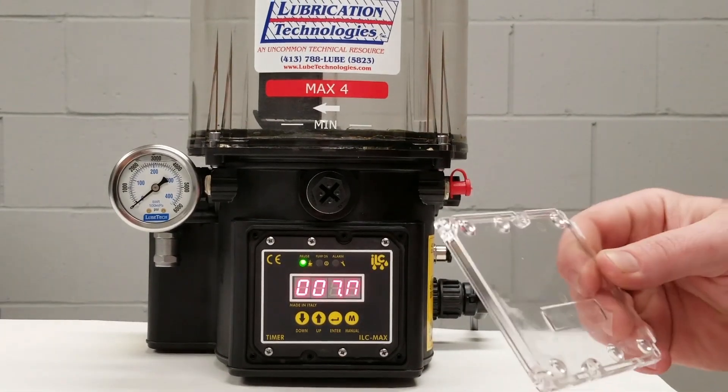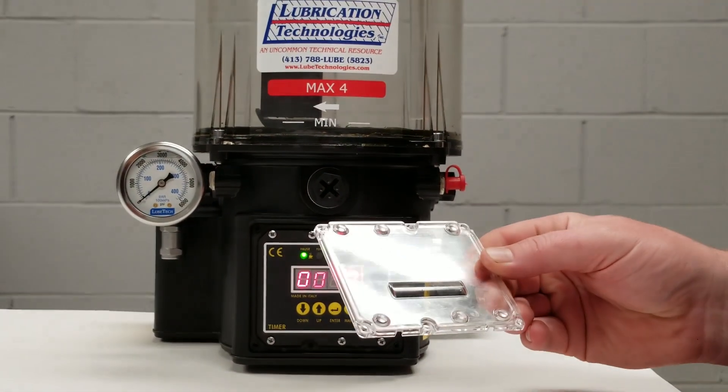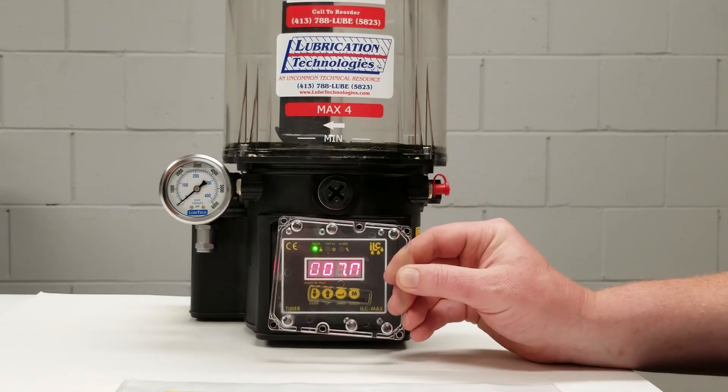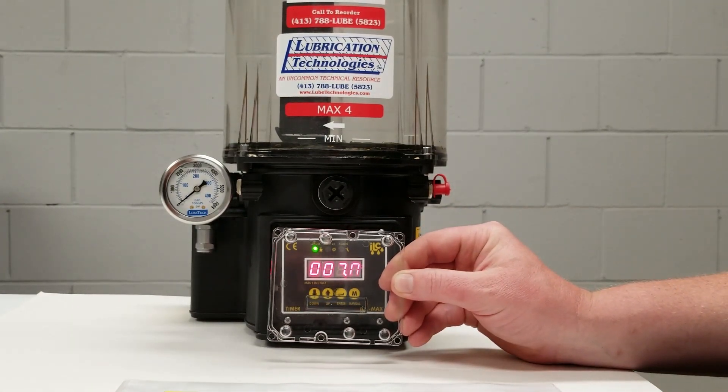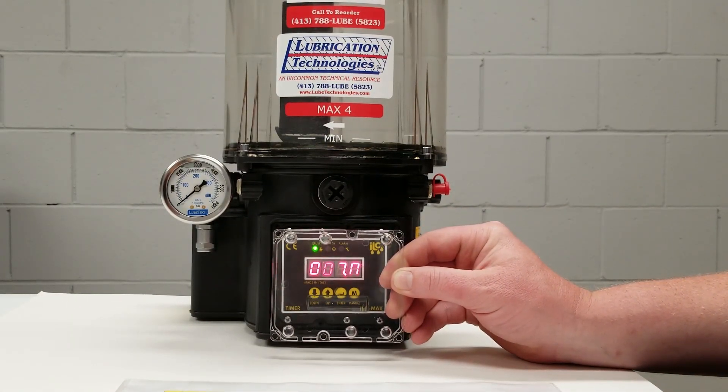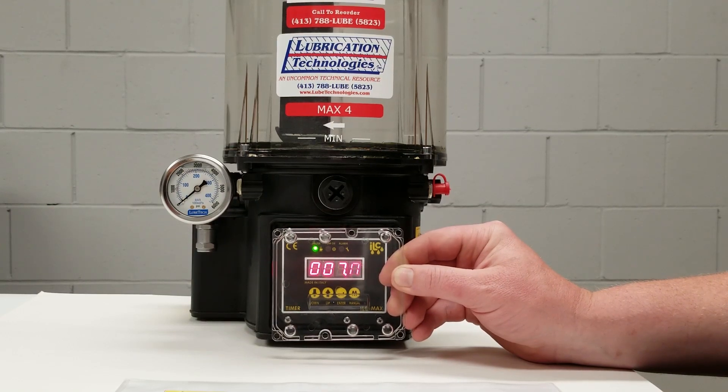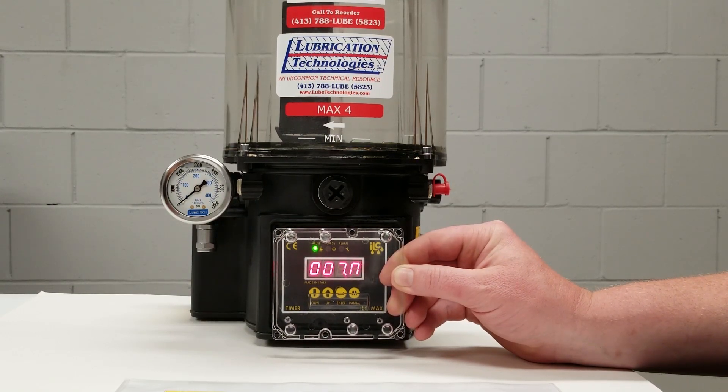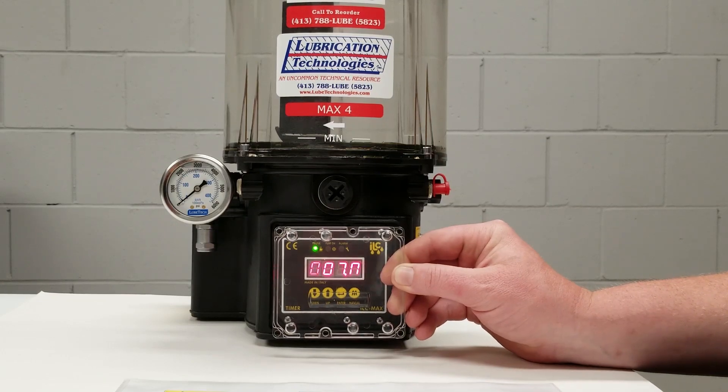Also too, it's very important once you've made your time changes, that you reinstall the plastic cover using the six supplied Phillips head screws. This helps aid in the outkeep of water or helps keep water out of the timer.